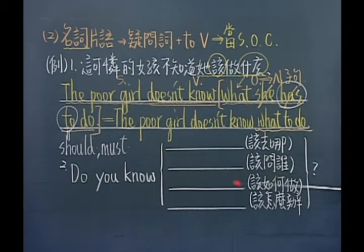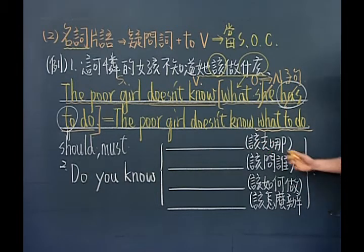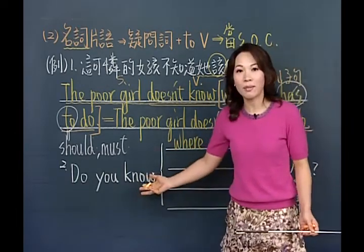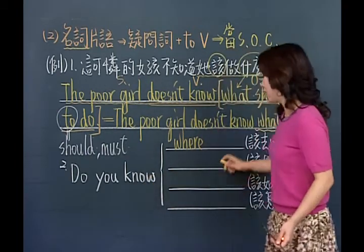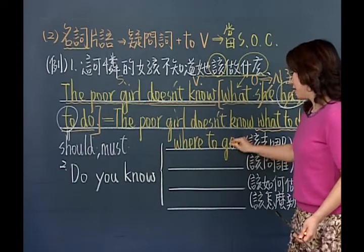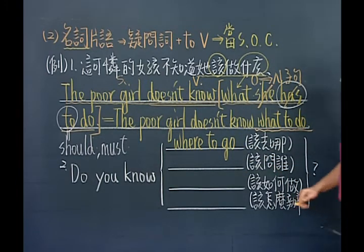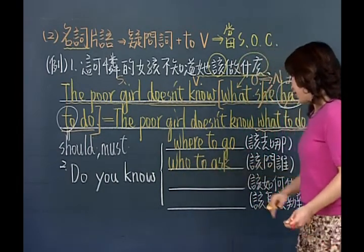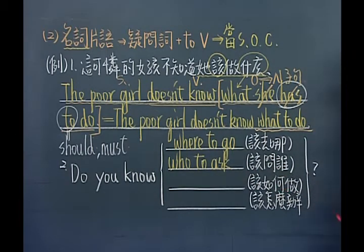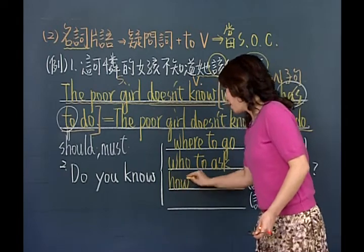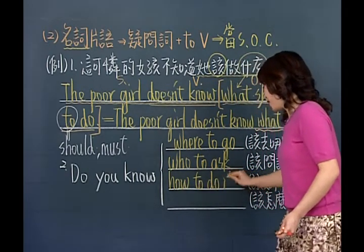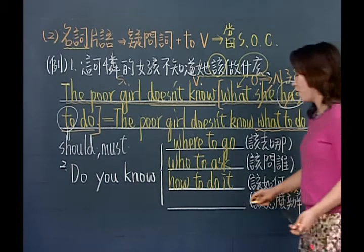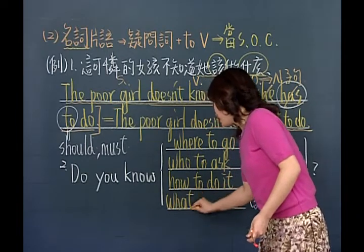下面列了几个有关于名词片语的用法：Do you know where to go？（你知道该去哪里吗？）Where to go。第二句：该问谁？Who to ask。第三句：该如何做？How to do it。第四句：该怎么办？What to do。